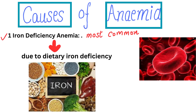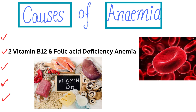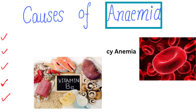Now there are several causes of anemia and it's important to understand them. The most common causes include iron deficiency anemia, which is the most common type and is often caused by the lack of dietary iron. The second type is vitamin deficiency anemia — deficiencies in vitamins like B12 and folic acid can lead to anemia.